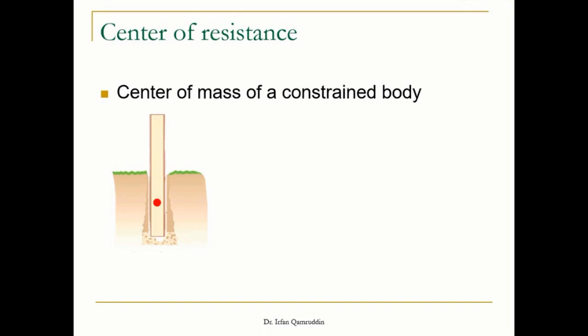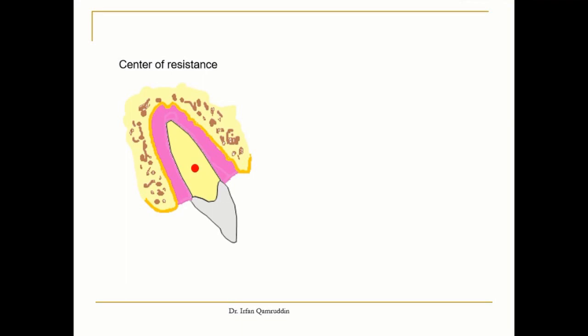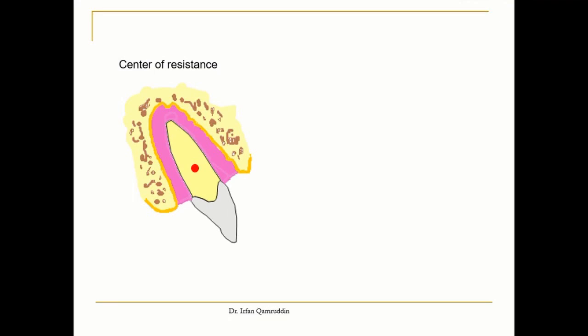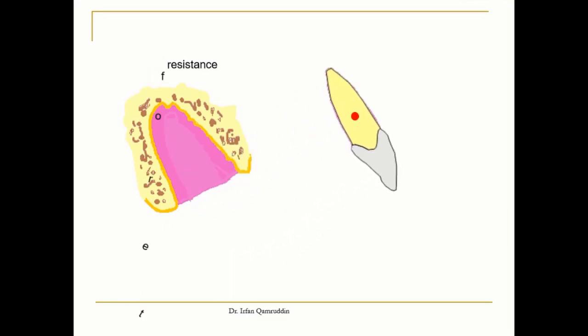When the body is constrained, this point will shift a bit downward, and we call it center of resistance. The basic difference between center of mass and center of resistance is: center of mass refers to a free object, while center of resistance refers to the same object when it is confined by any structure. Like a tooth — when it is extracted, we call it center of mass, but when it is present within the bone surrounded by periodontal ligament and alveolar bone, we call it center of resistance.